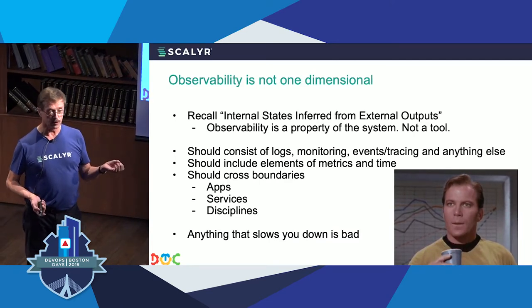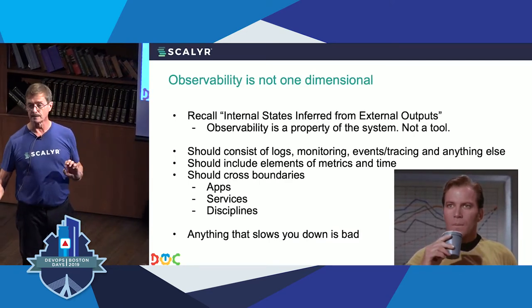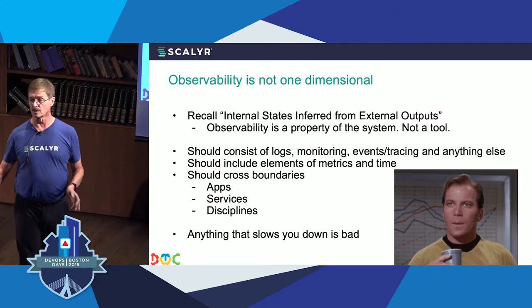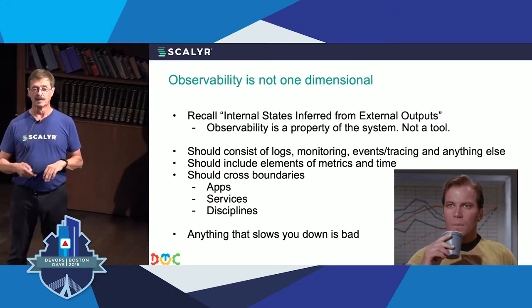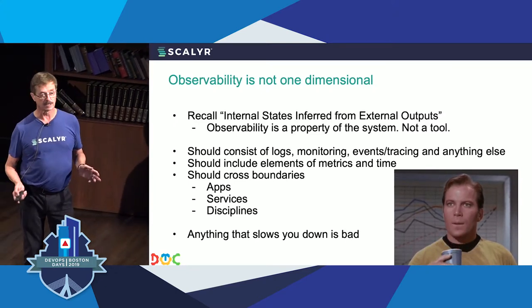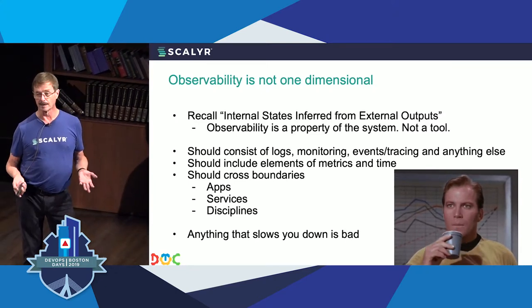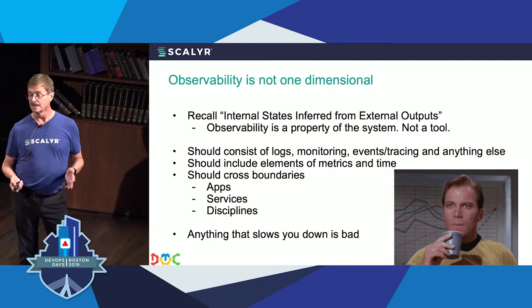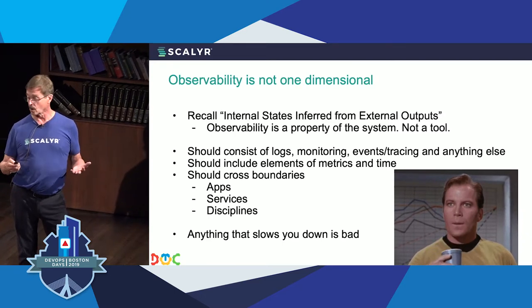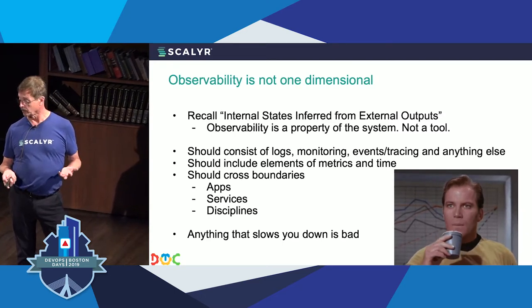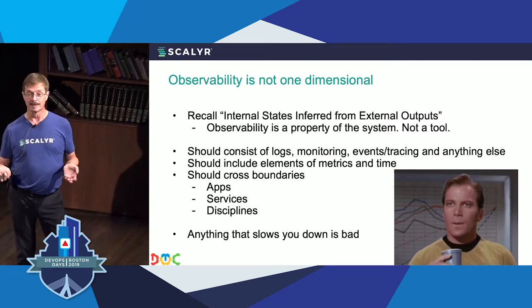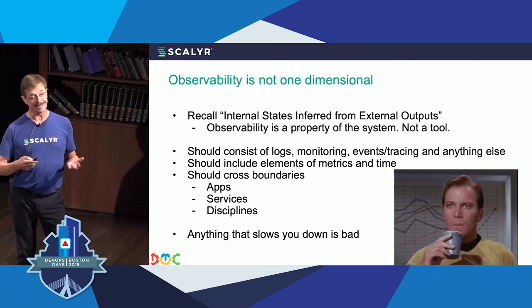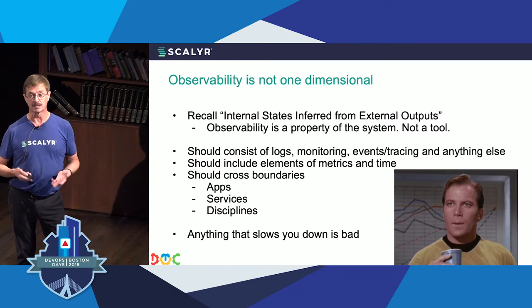Observability has to cross all boundaries: the application boundaries, the service boundaries. Kubernetes, for instance, adds four layers of infrastructure to your environment. You need to get all that data in one place. And honestly, anything that slows you down is bad.